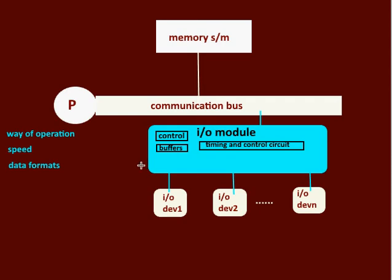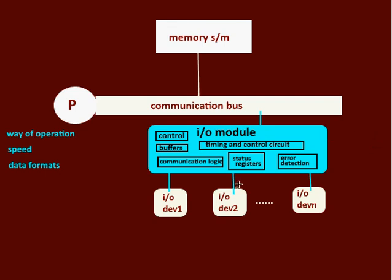For example, even though the processor can transfer the data at a higher rate compared to that of the I/O device, we can keep the data from the processor in the buffers and provide it to the device in such a way that it will never become a burden for it. Also, the I/O module can keep the required communication logic to handle the communication between either side with necessary data format and word length conversions. It keeps the status registers and the error detection logic to check the status of the devices and to detect any error corresponding to the I/O device. So, the I/O module acts as a bridge or an interface between the internal storage and the I/O devices and effectively manages the communication between either side.